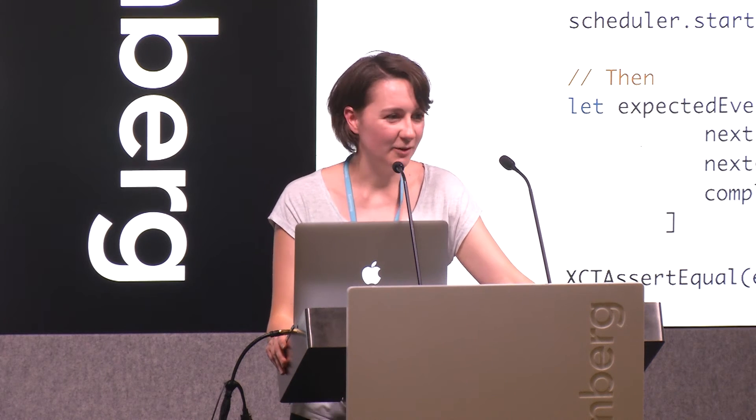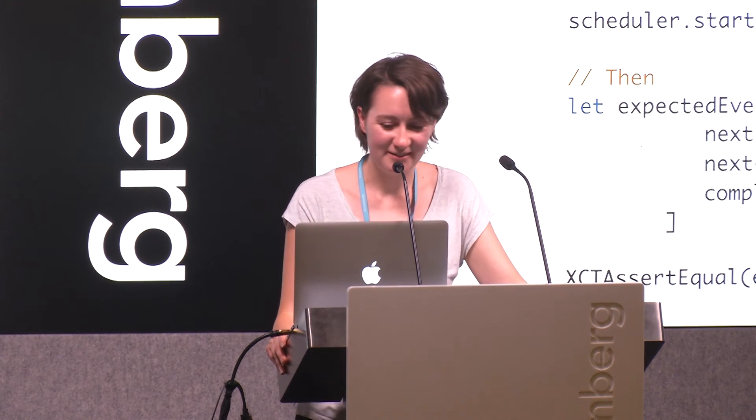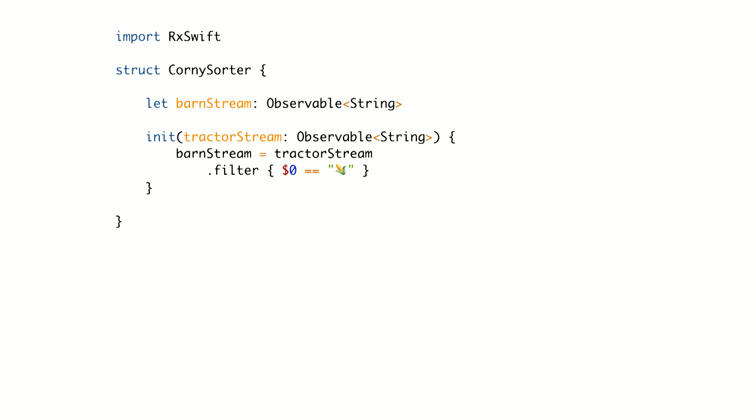At the moment our tests are failing, so we just need to make those tests pass. We simply filter out anything that's not corn. And that's the example. I hope it seems quite simple. I know until I learned it, I thought it'd be terrifying.